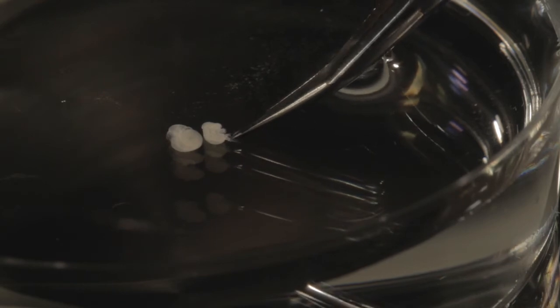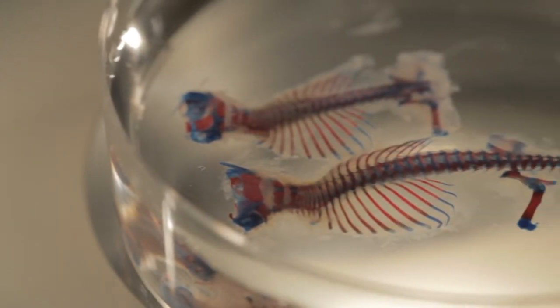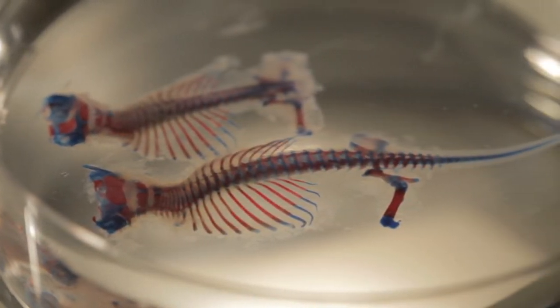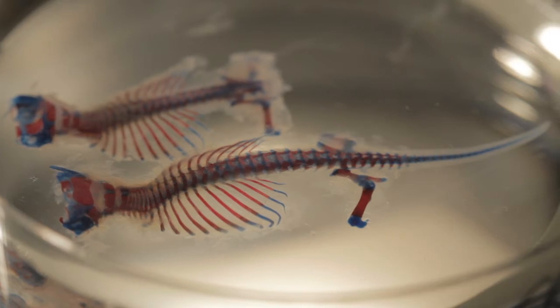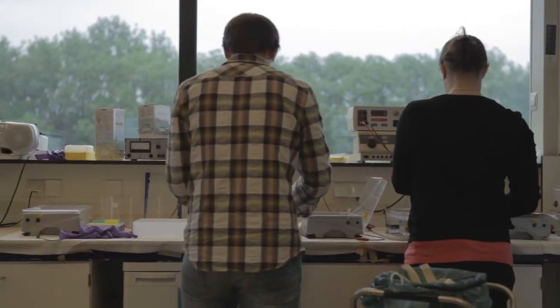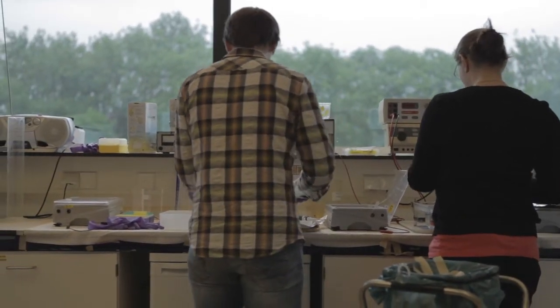We study these processes in the mouse embryo because mouse and humans develop very similarly, and they also have a very similar genome. So these mouse embryos are a good model in which to study human embryonic development and how this embryonic development can go wrong.